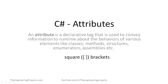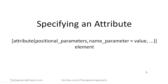You can add declarative information to a program by using an attribute. A declarative tag is represented as square braces. Attributes are used for adding metadata such as compiler instructions and other information such as comments, descriptions, methods, and classes to a program. The .NET framework provides two types of attributes: predefined attributes and custom built attributes.